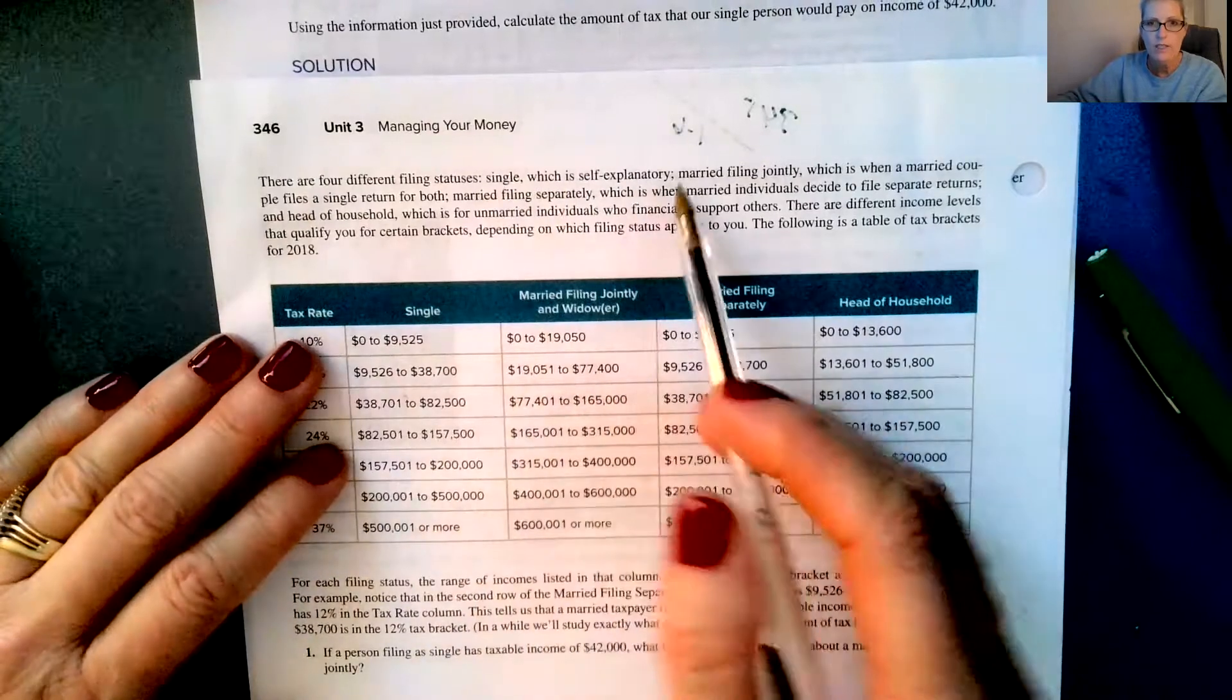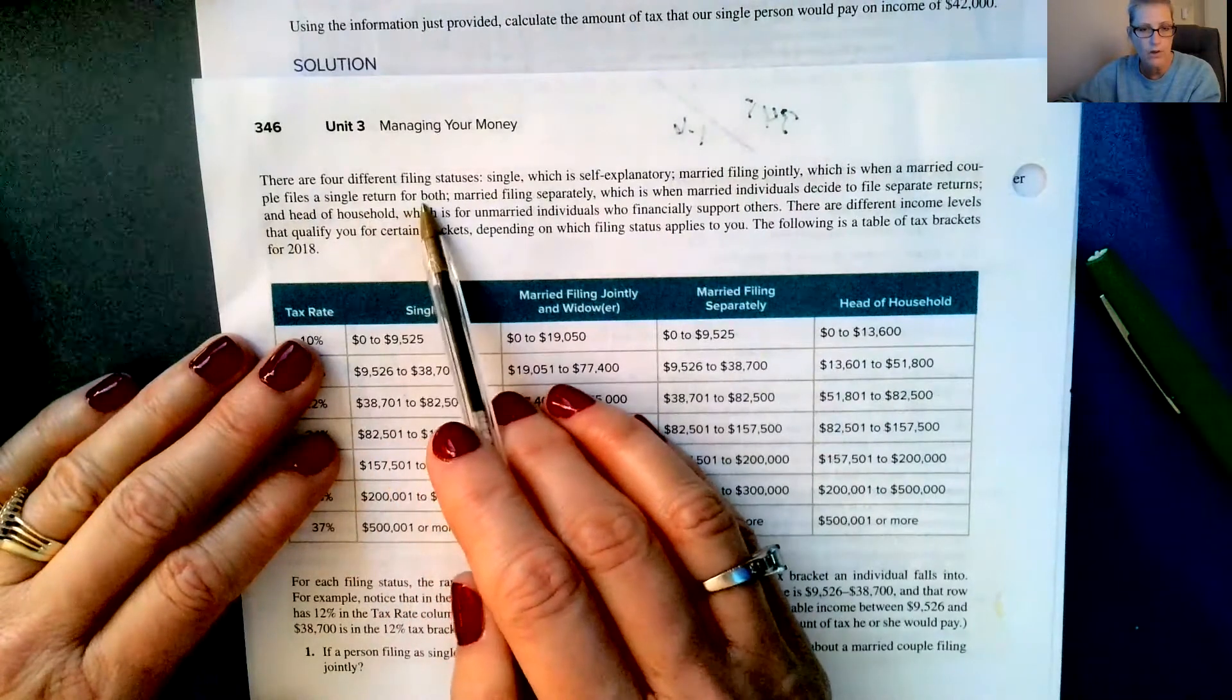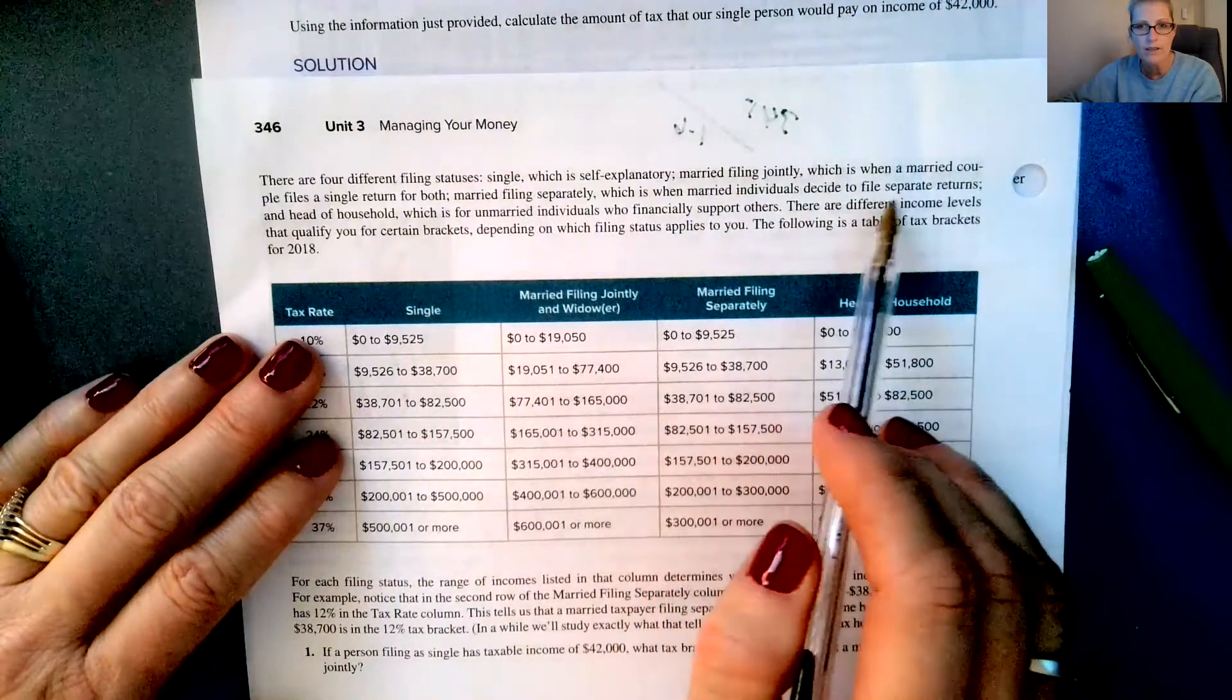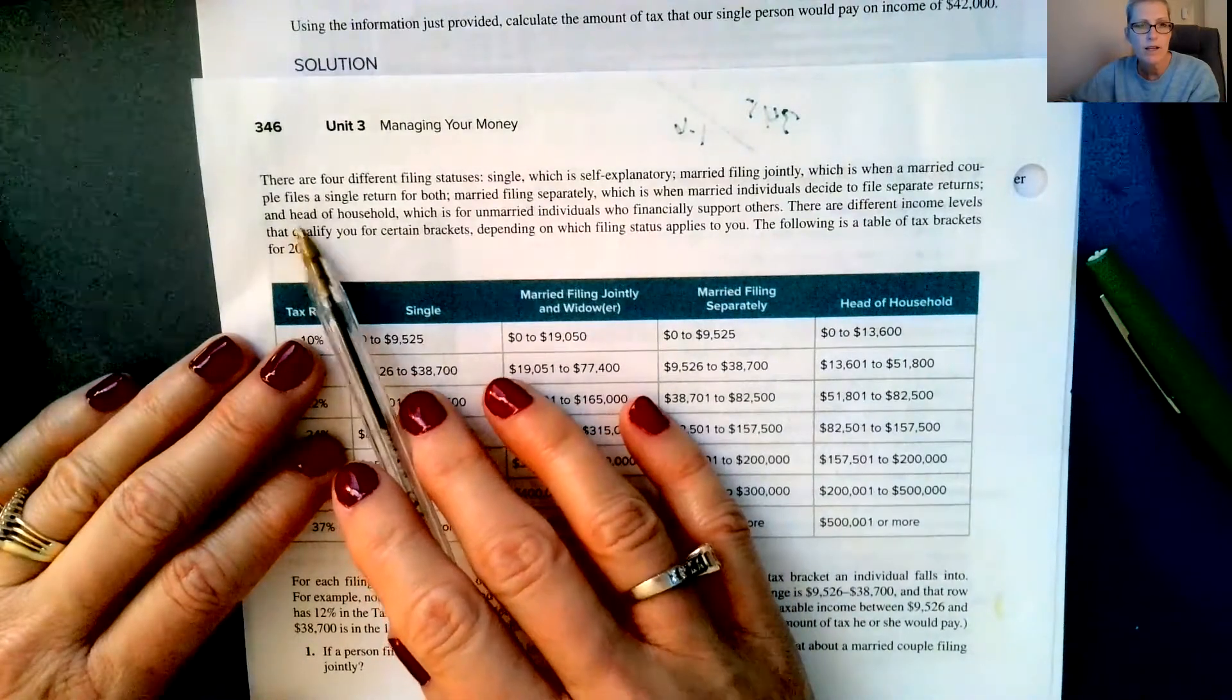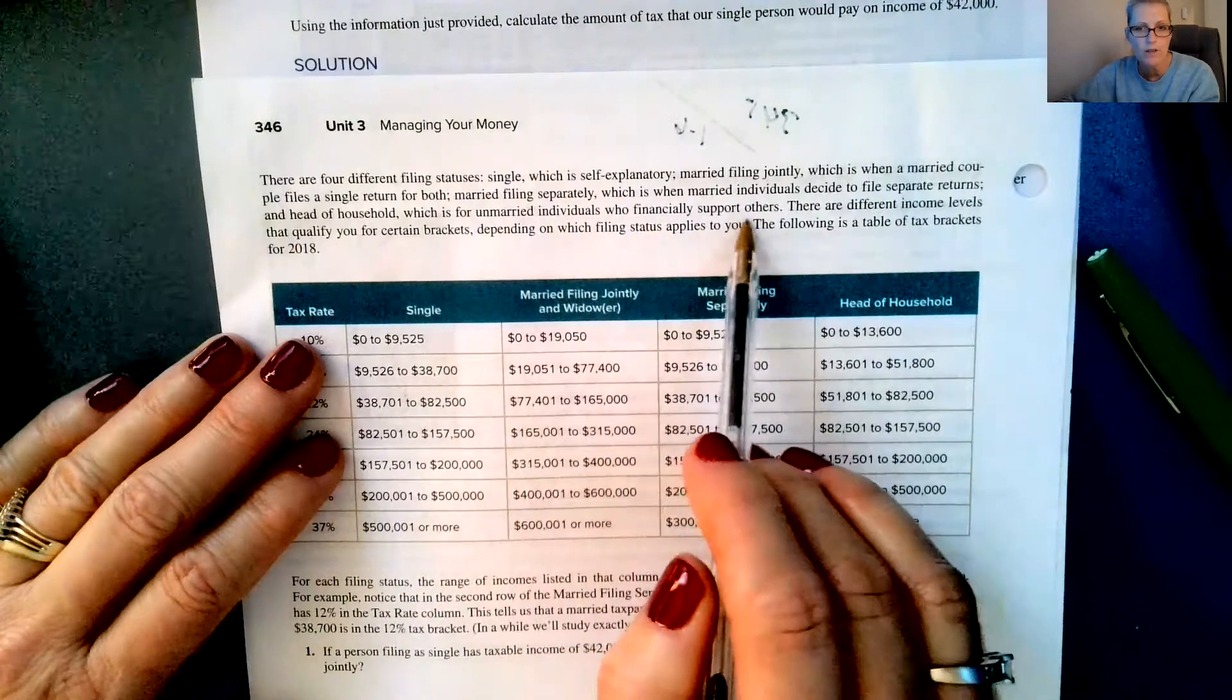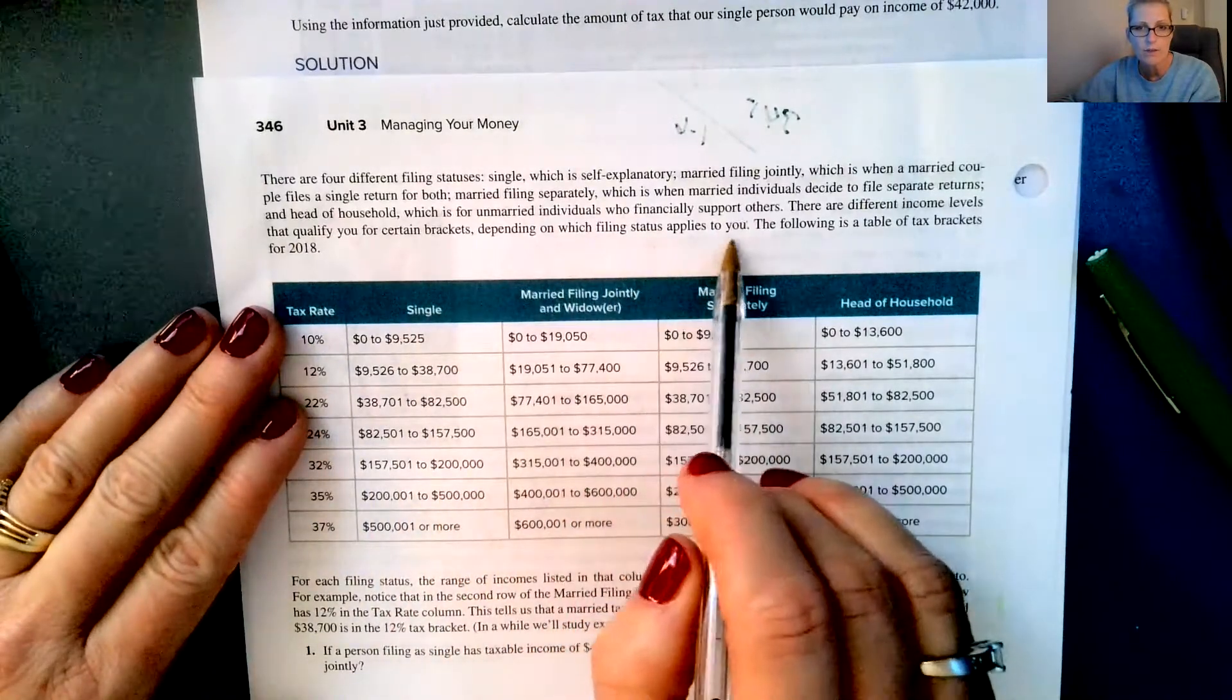There are four different filing statuses. You can file as single, which is self explanatory. You can file married filing jointly, which is when a married couple files a single return for both. You can file married filing separately, which is when married individuals decide to file separate returns. I think usually that's if you're getting divorced, but I'm not sure. And you can also file as head of household, which is for unmarried individuals who financially support others.